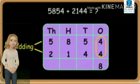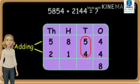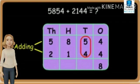Now moving on to the number of digits in the tens place we have 5 and 4. So while adding 5 and 4 we get 5 plus 4 is equal to 9.